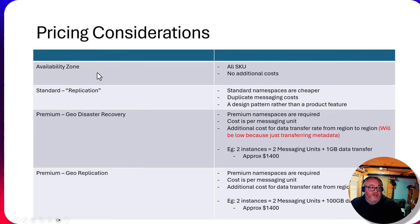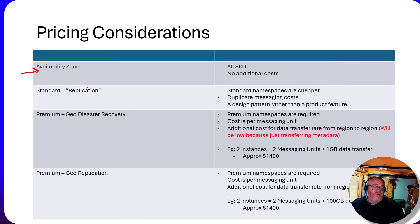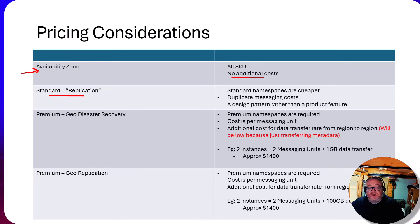Let's step back through the options we've discussed. First, availability zones - available on all tiers - had no extra cost beyond what you're already paying, whether Standard or Premium. Microsoft takes care of that behind the scenes. For the Standard namespace replication pattern, Standard namespaces are cheaper, but you're effectively duplicating messaging by sending to two namespaces at the same time. Since you pay per message on Standard, that roughly doubles your cost if you're sending and receiving every message twice. As I mentioned, it's more of a design pattern than a product feature.